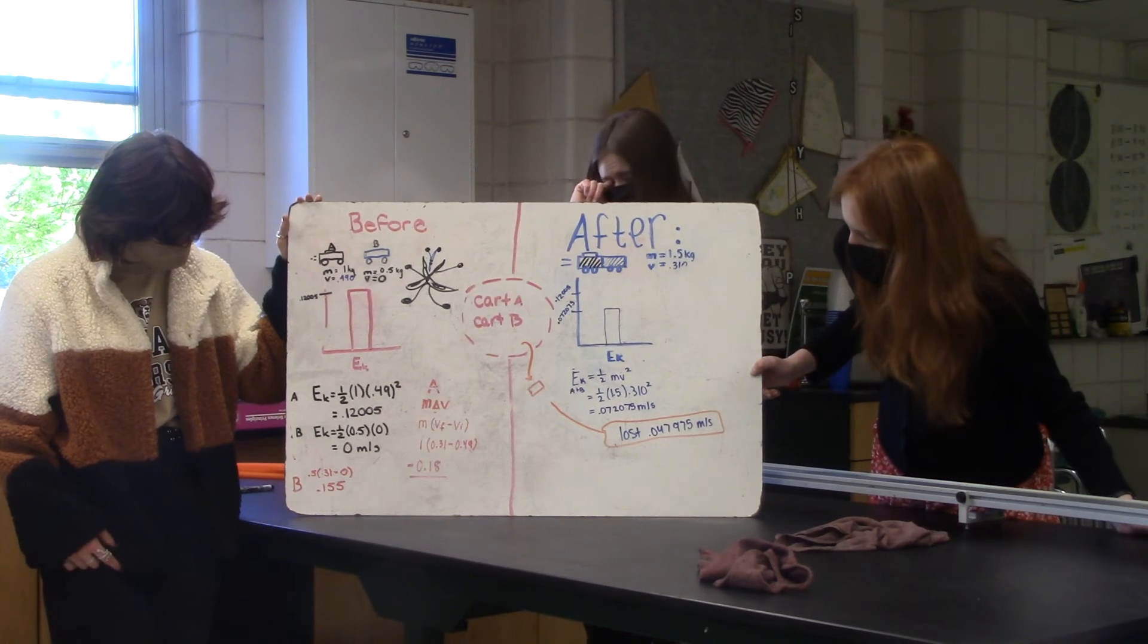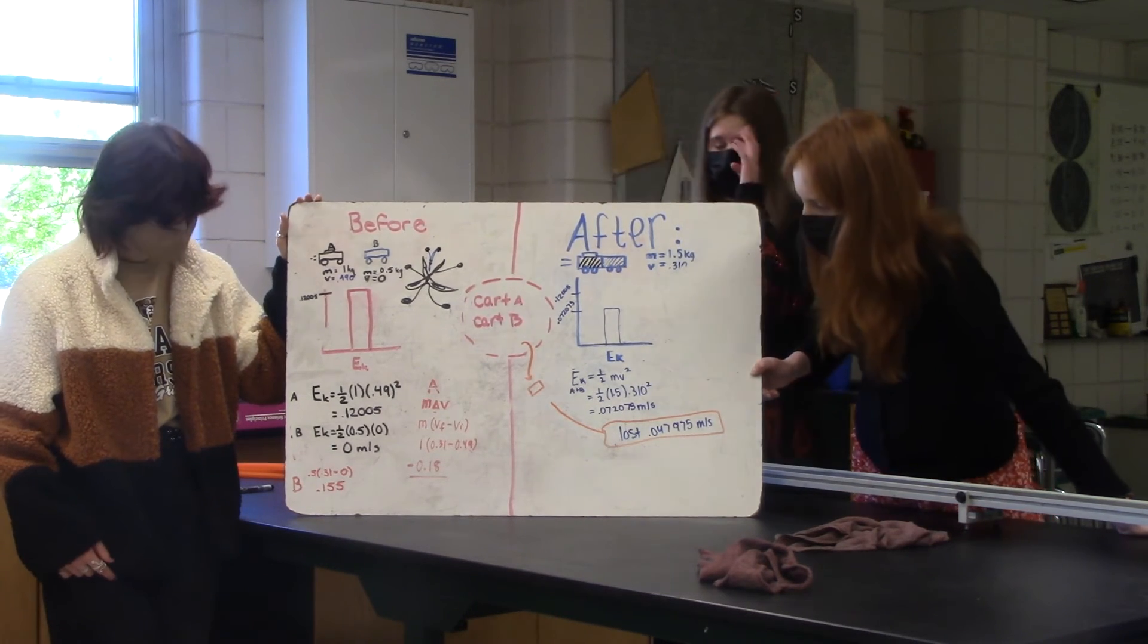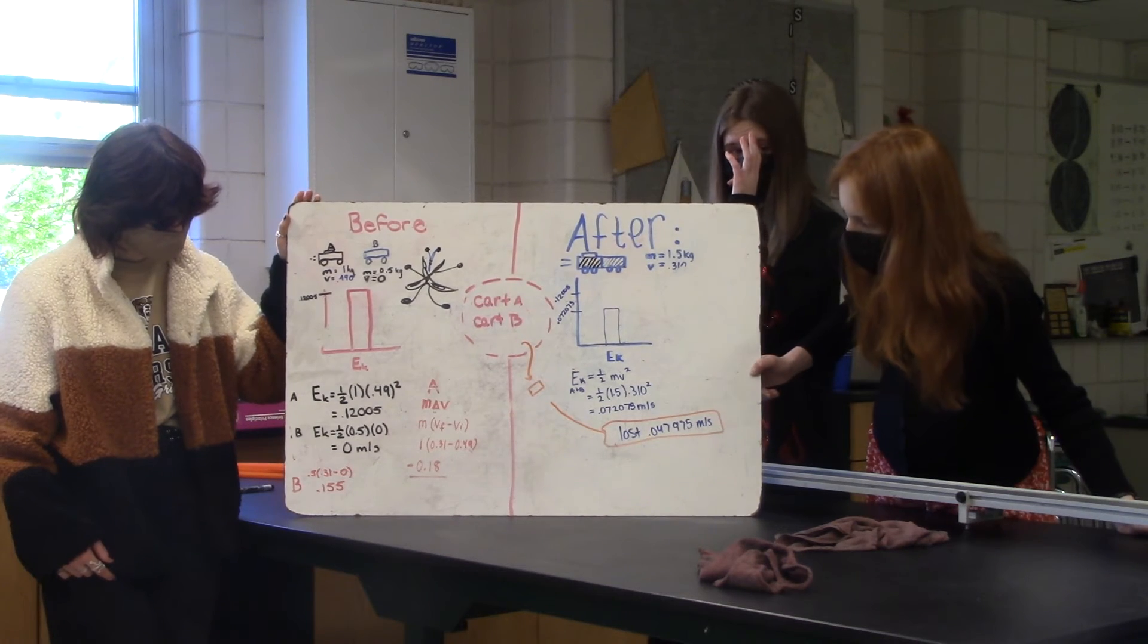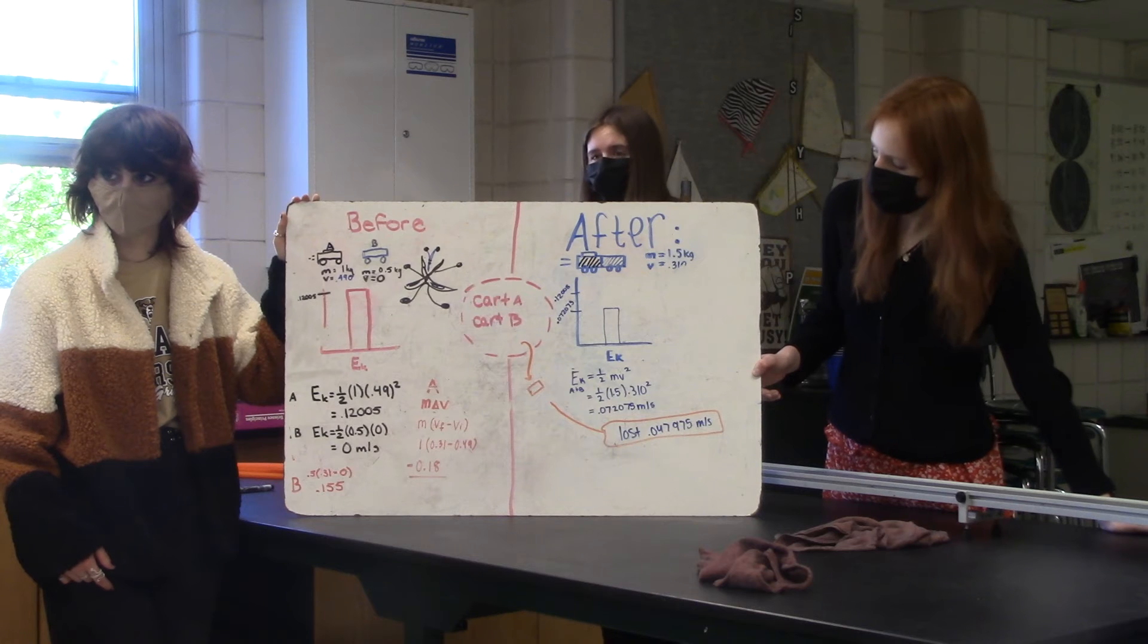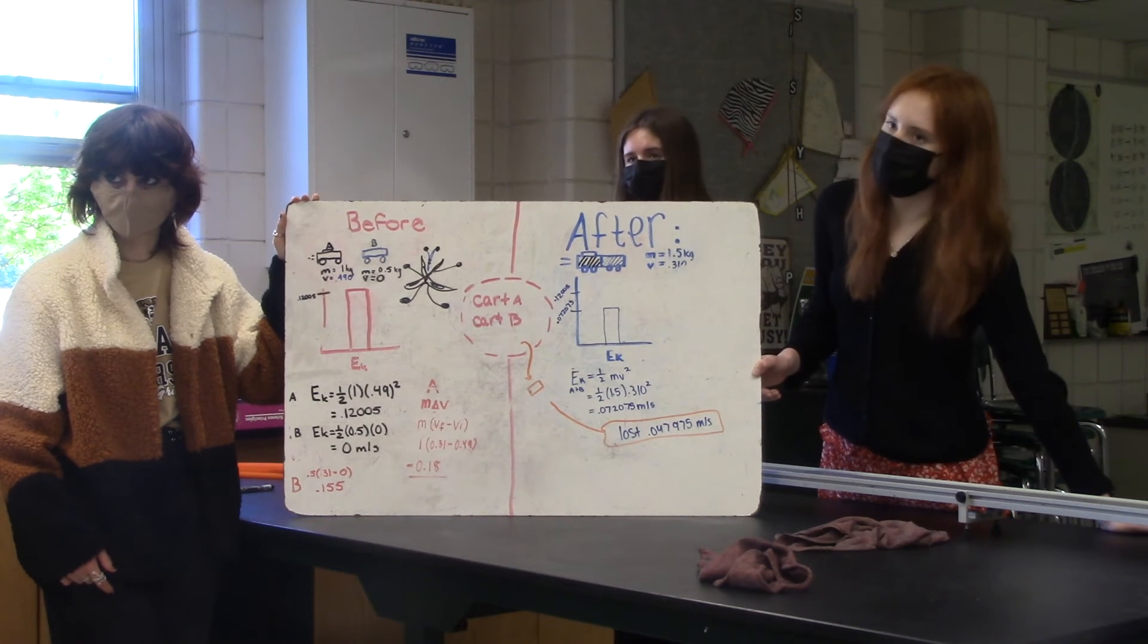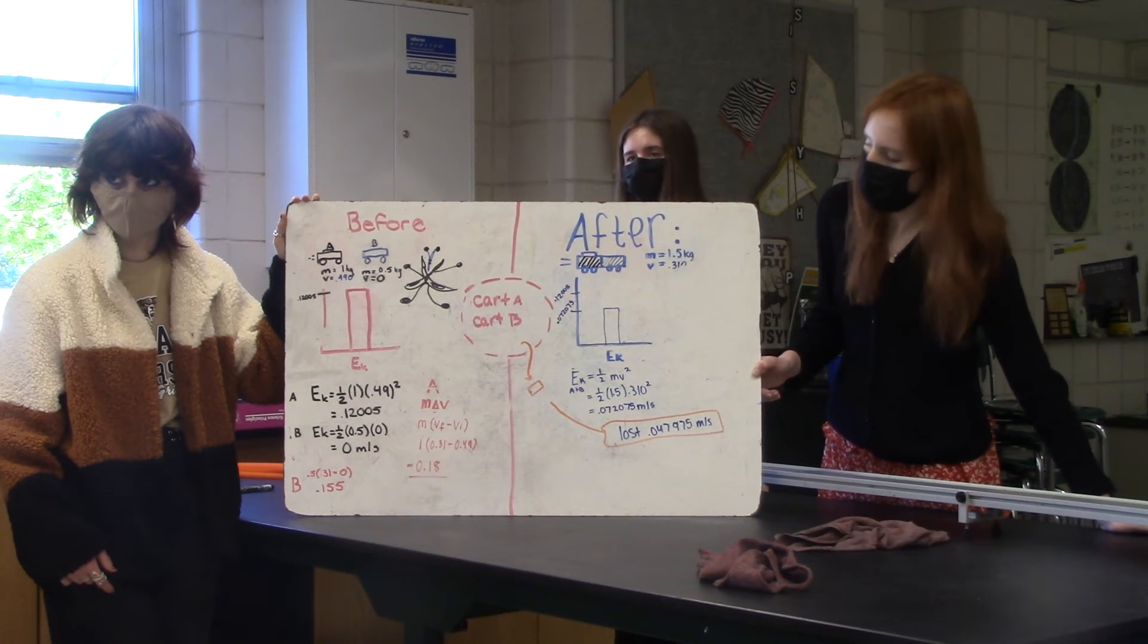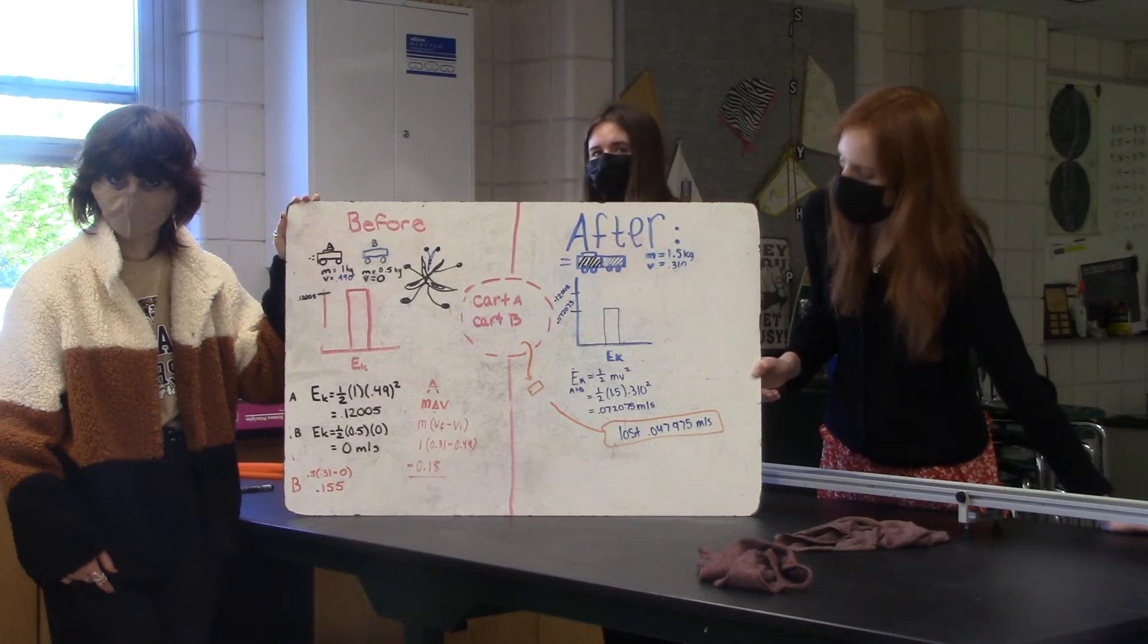So did you do the M delta V for each one? Yeah. For cart A, we got negative 0.18, and then cart B, we got 0.155. So you got positive 0.155 and negative 0.18. All right. So one's positive, one's negative.